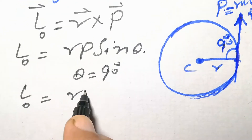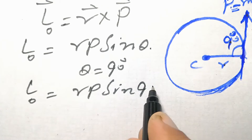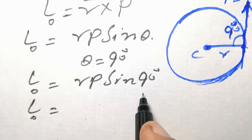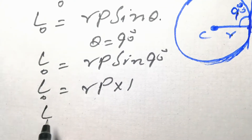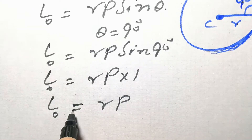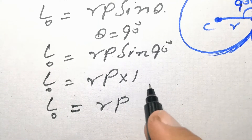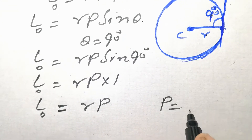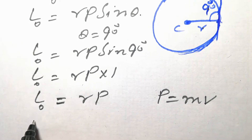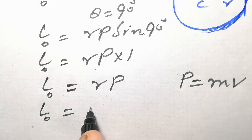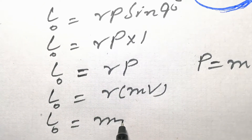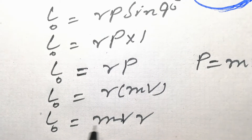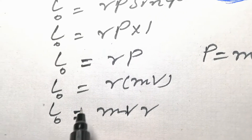Since θ is equal to 90 degrees, we insert the value: L₀ = Rp sin 90. Since sin 90 equals 1, we get L₀ = R × P. Since P is the linear momentum equal to MV, substituting gives L₀ = R × MV, and after simplification, the answer is MVR.